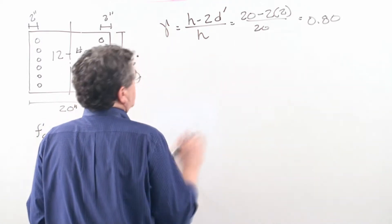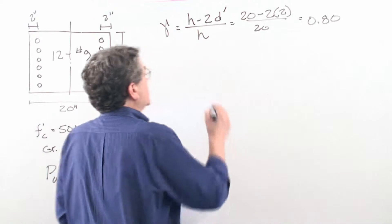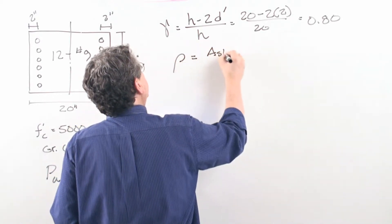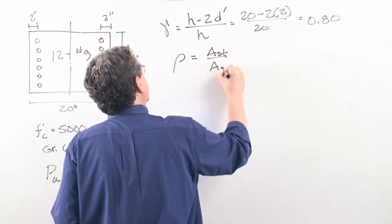Next we need to determine the reinforcement ratio, and that's just our area of steel divided by our gross area.